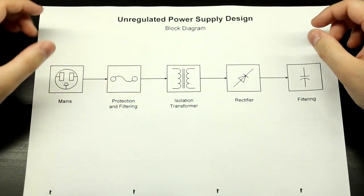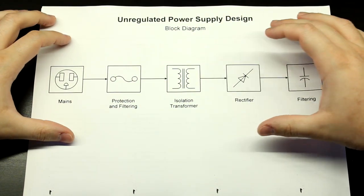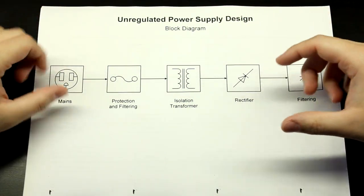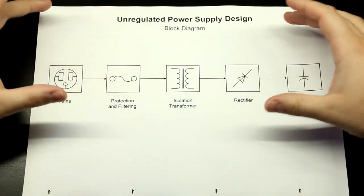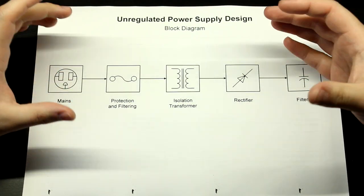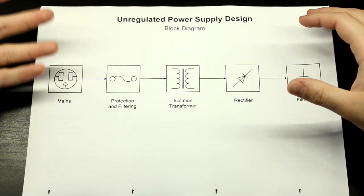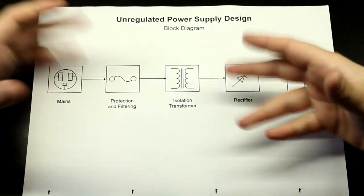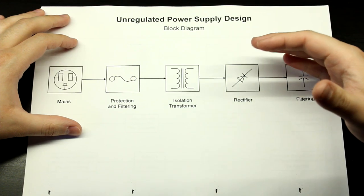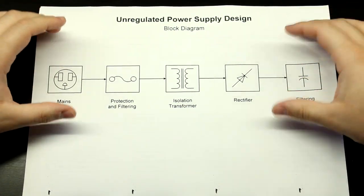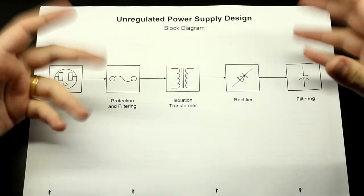Hello everyone. In today's video we'll be talking about how to properly design an unregulated power supply. This was going to be part of the headphone amplifier series, but I decided to make a standalone video since this subject and the way that I'm going to be approaching it is extremely generic and useful for whatever project you'll need powered from mains with a linear supply — no switch mode. We'll be using the headphone amplifier as an example for all our calculations.